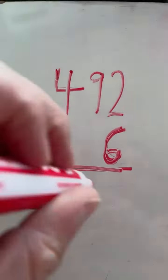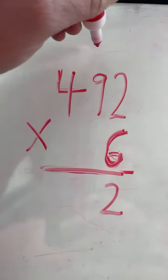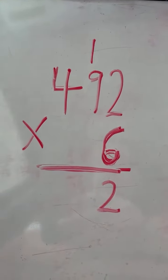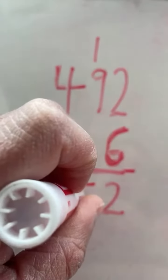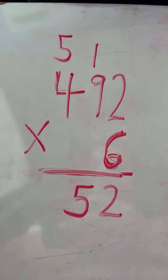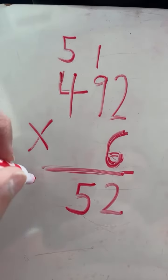Two times six equals twelve. Two, carry the one. Nine times six equals fifty-four, plus one equals fifty-five. Five, carry the five. Four times six equals twenty-four, plus five equals twenty-nine.